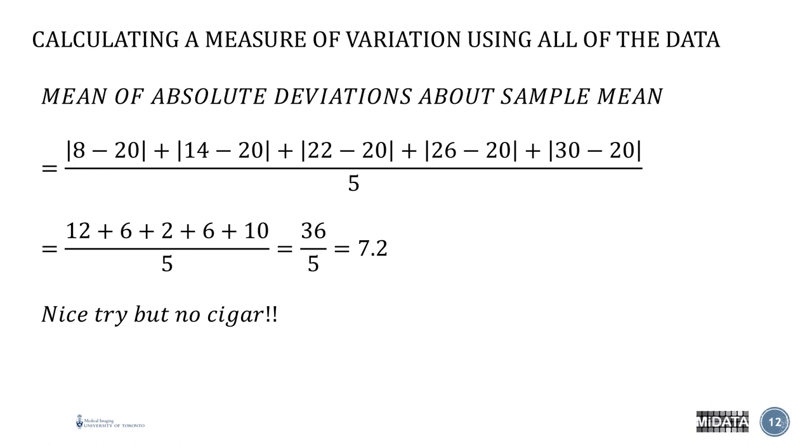How about if we were to take the mean of the absolute deviations about the sample mean? So this way, we're certain, or pretty certain, that we're not going to get zero as an answer. I think we're getting close, but we're not quite there yet.